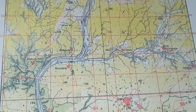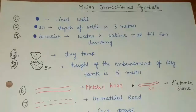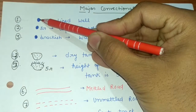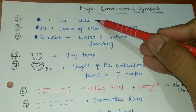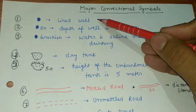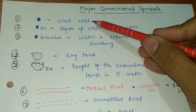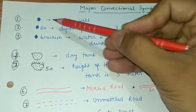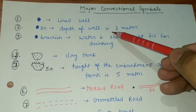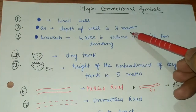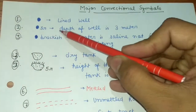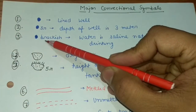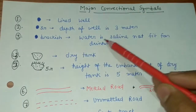The first major conventional symbol is the lined well. It is shown by blue dots on the map and represents water present in that region, which can be used for irrigation. A blue dot with '3r' indicates the depth of the well is three meters. If the word 'brackish' is written near the blue dot, it represents that the water is saline and not fit for drinking.